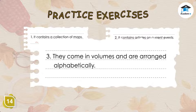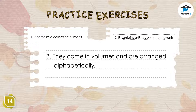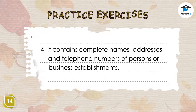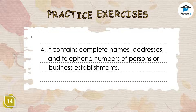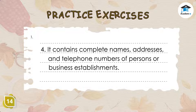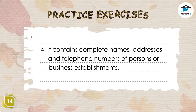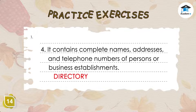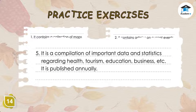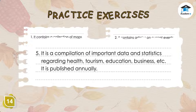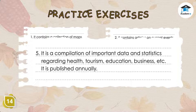Number 3: They come in volumes and are arranged alphabetically. Number 4: It contains complete names, addresses, and telephone numbers of persons or business establishments. Number 5: It is a compilation of important data and statistics regarding health, tourism, education, business, etc. It is published annually.